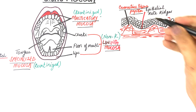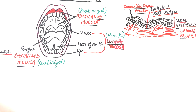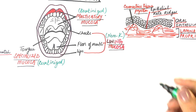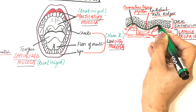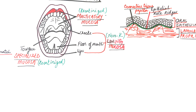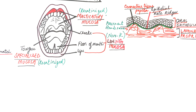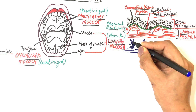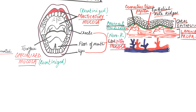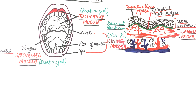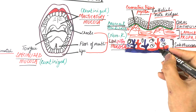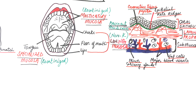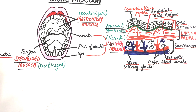Lamina propria supports and nourishes the superficial layer of the avascular epithelium. The superficial layer of the oral epithelium is separated from the underlying lamina propria through a thin layer of basement membrane known as the basal lamina. Below the oral mucosa, underneath the lamina propria, lies the submucosa, which is occupied by major blood vessels and nerves, the minor salivary glands, and some adipose or fat tissue. This layer of submucosa is absent in the hard palate and gingiva, so that a firm attachment of mucosa is provided at these sites.